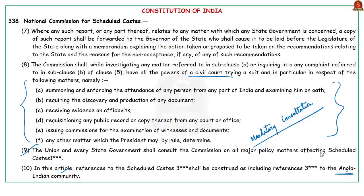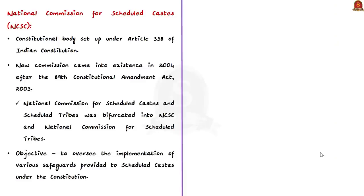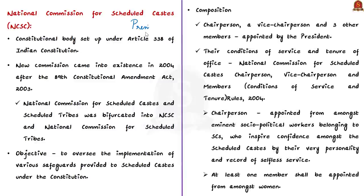The National Commission for Scheduled Castes consists of a chairperson, a vice-chairperson and three other members, all appointed by the president. As per the 2004 rules, the chairperson shall be appointed from among eminent socio-political workers belonging to the Scheduled Castes, and at least one member shall be appointed from among women.